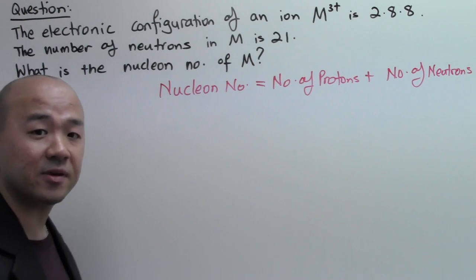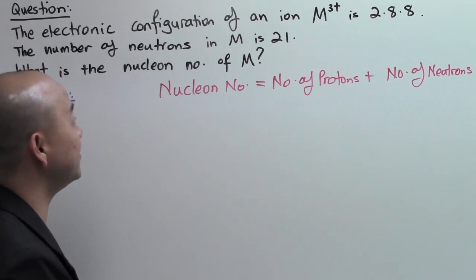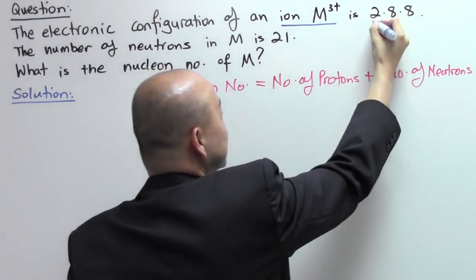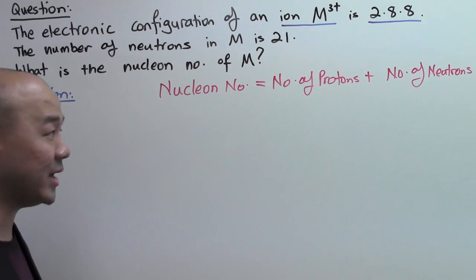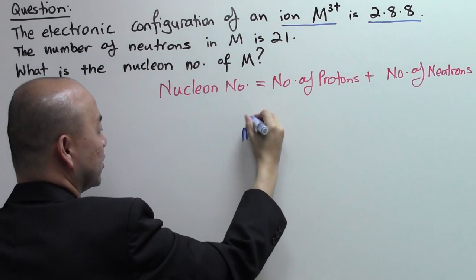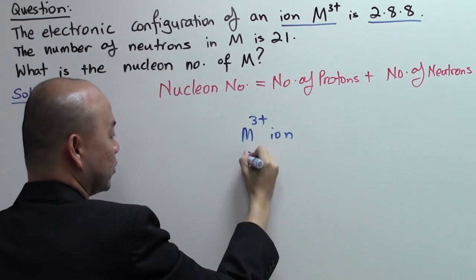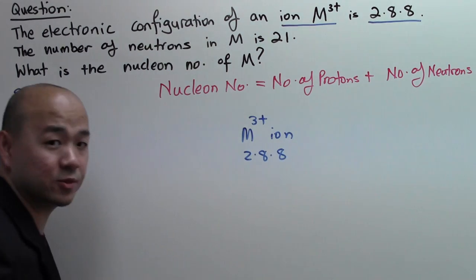Next you need to decipher the information given in the question. They say an ion M3+ has electronic configuration of 2.8.8. That means the ion will be this, with the electronic configuration of 2.8.8.